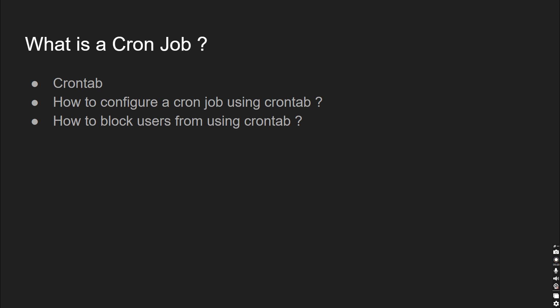Cron jobs can be achieved by using a command called crontab. Crontab stands for cron table, which is a file inside the Linux operating system where we keep the cron entries. We specify the schedule and the script to execute, and the cron executor will pick this file, identify the schedule, and execute the script based on it.